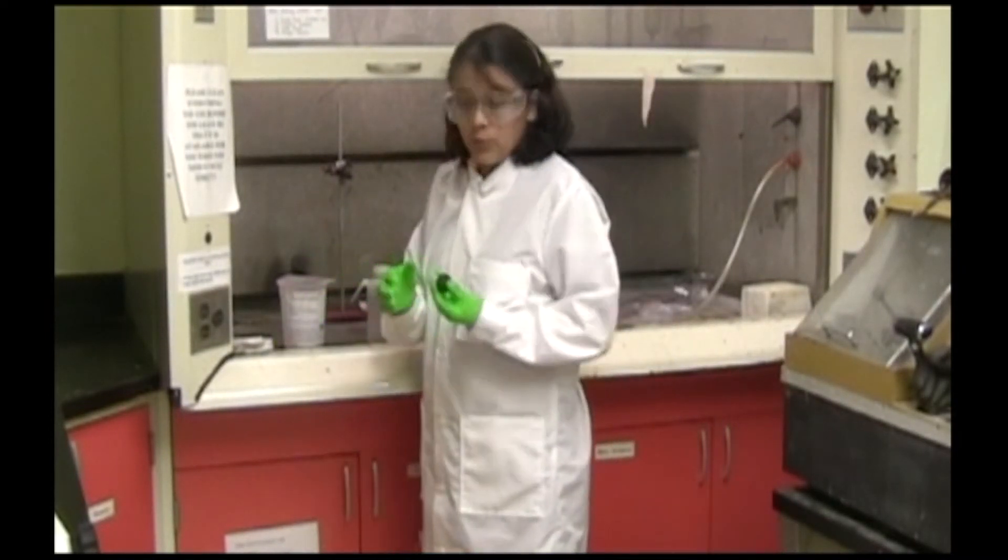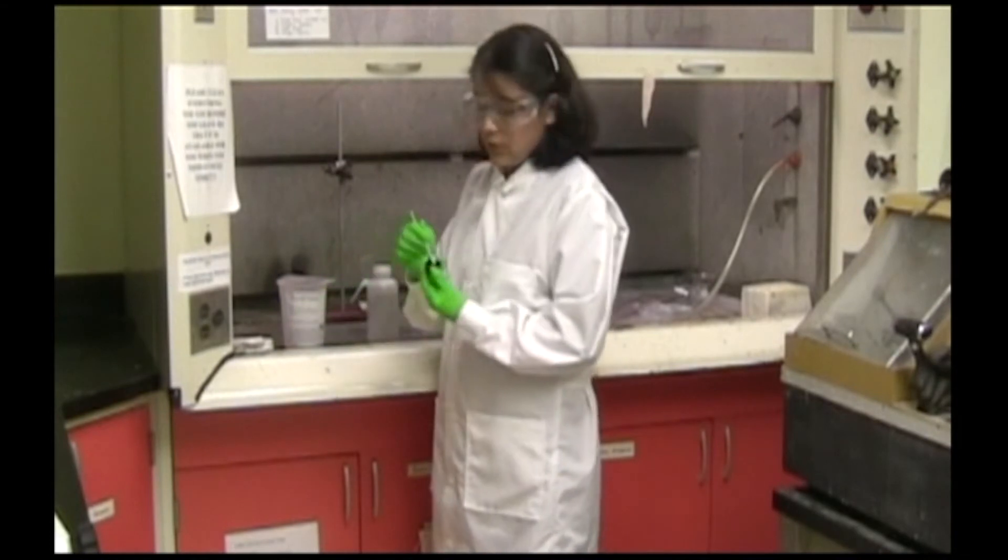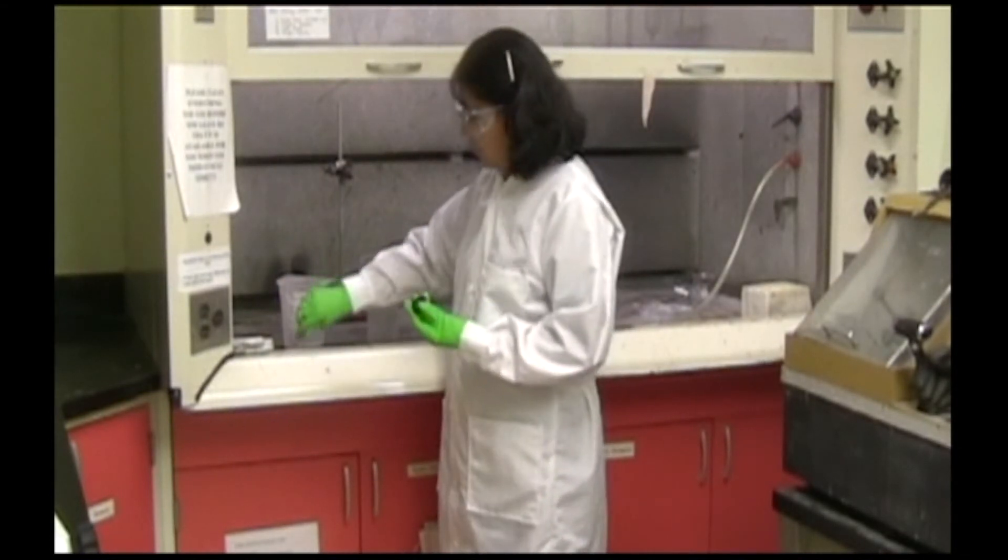When you're etching your sample, you put the etchant on your sample surface, and you can use a cotton swab to spread it out.